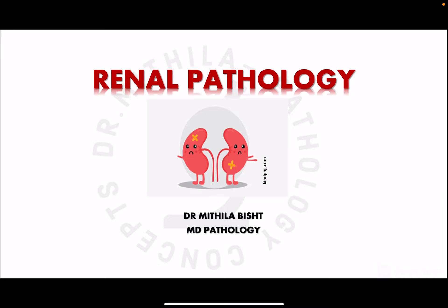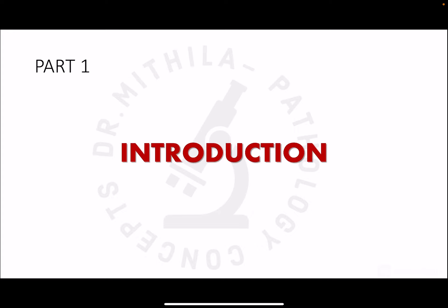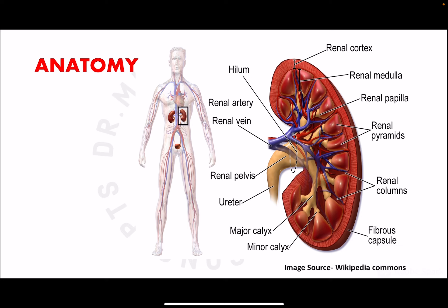Hello and welcome everyone. I am starting a new series of lectures on kidney pathology, beginning with an introduction to the anatomy of the kidney. The kidney has an outer renal cortex and an inner part known as the renal medulla. The cortex contains the glomerulus and the proximal and distal tubules, while the medulla — especially in the renal pyramids — contains the loop of Henle and the collecting ducts, which converge at the renal papilla.